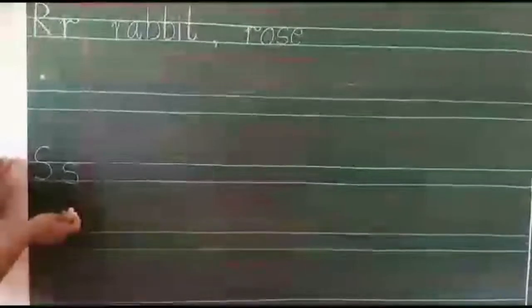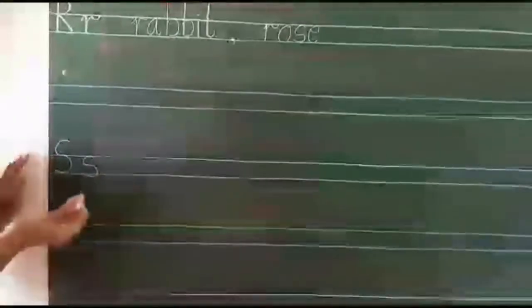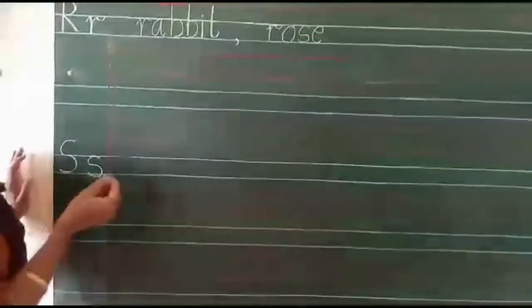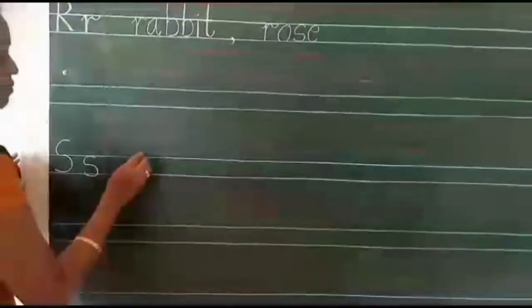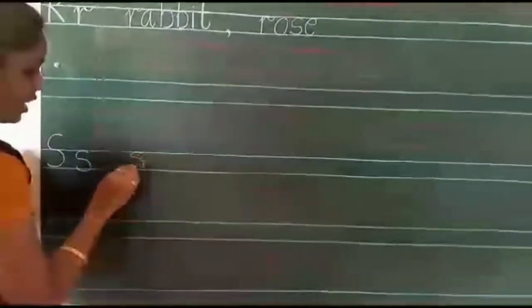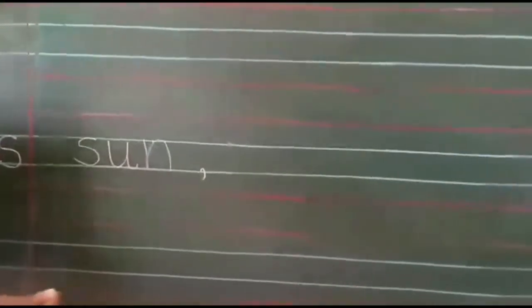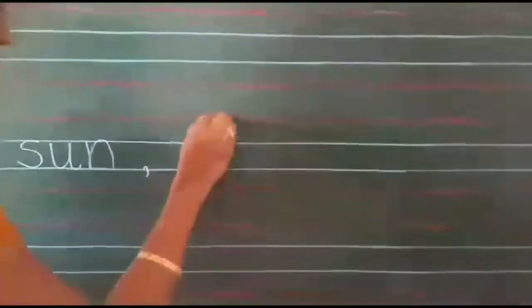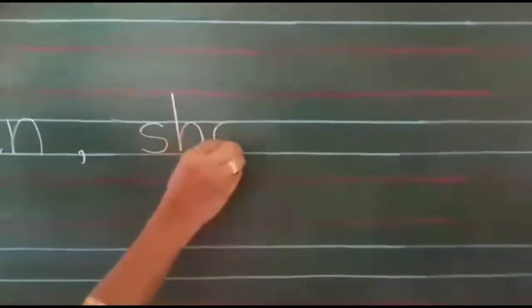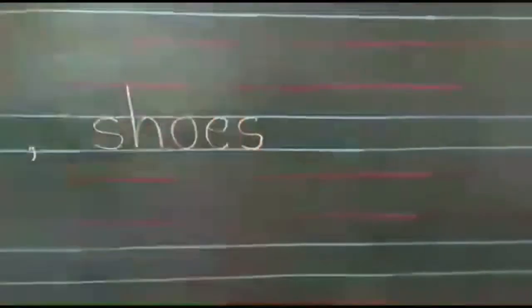S for sun, S for sunlar, S for shoes, S for socks. So which spelling will you write? Write the spelling of sun: S, U, N — sun. Comma. Another spelling: shoes — S, H, O, E, S — shoes.